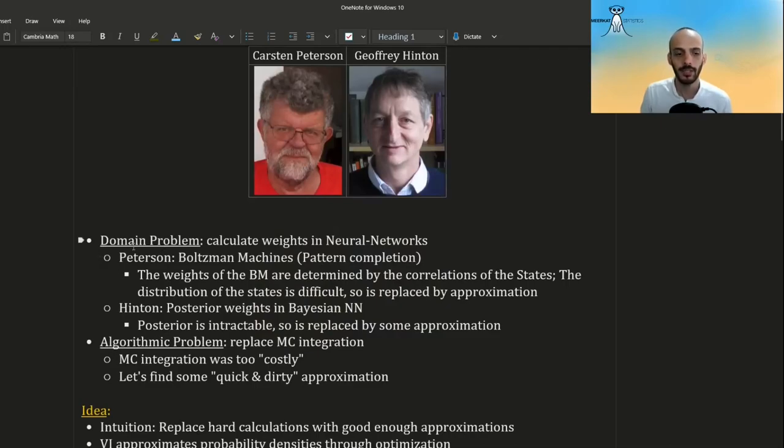In both papers, the domain problem was to calculate weights in neural networks. In Peterson's case, it was Boltzmann machines, which are pattern completion algorithms, and the weights of the Boltzmann machines are determined by the correlation of the states of the patterns, and the distribution of the states is too difficult, so it's replaced by an approximation.